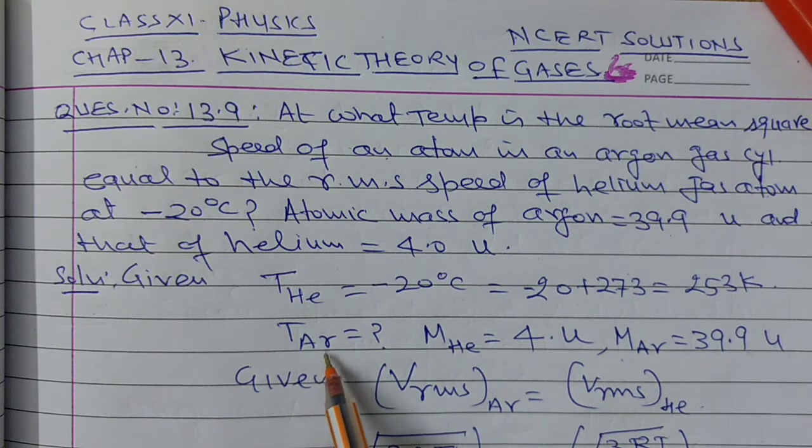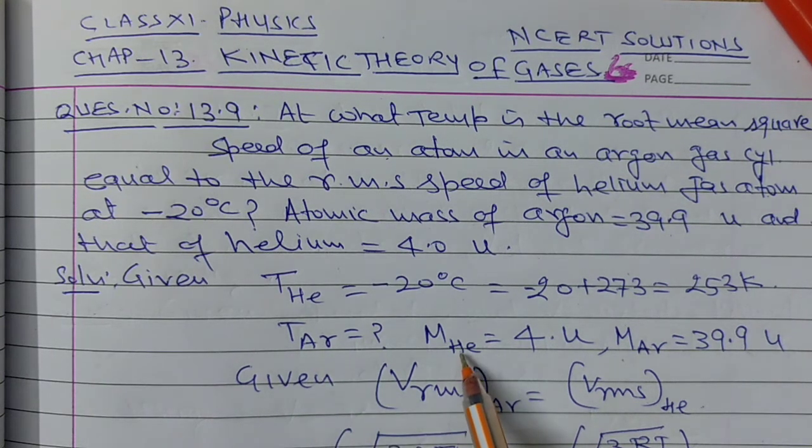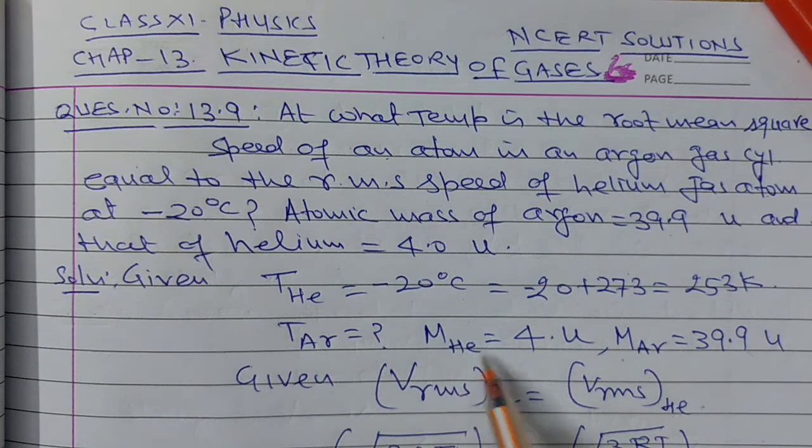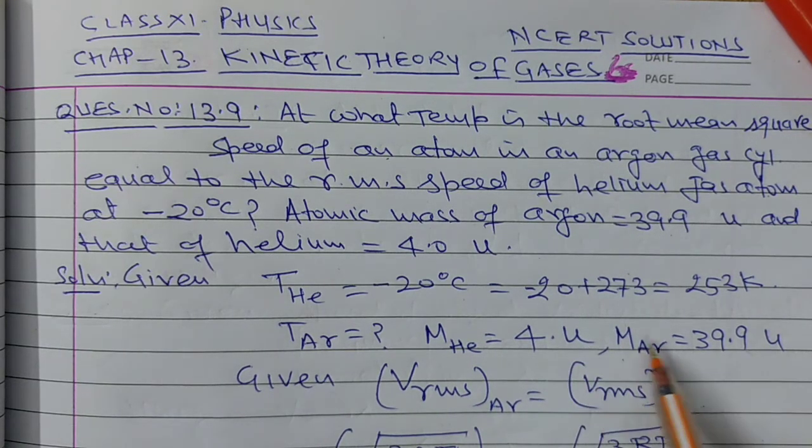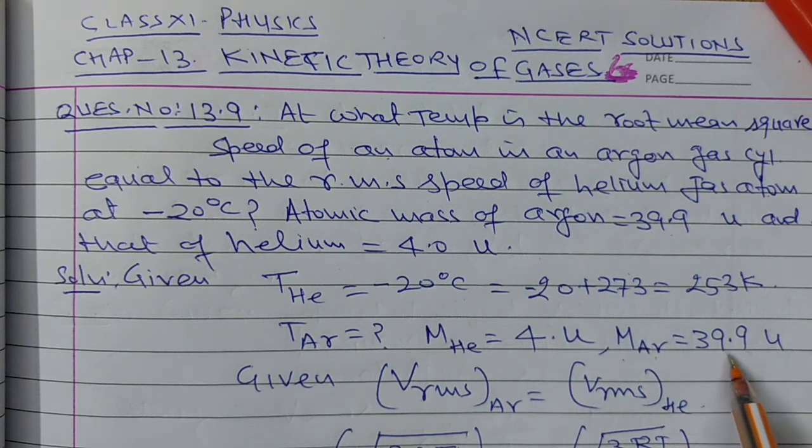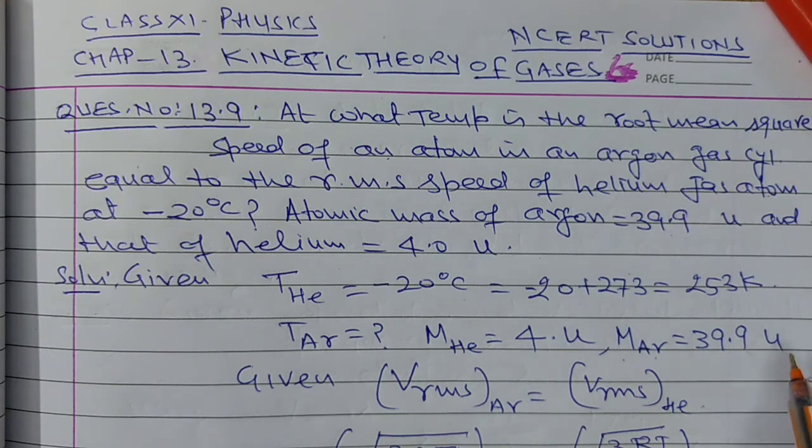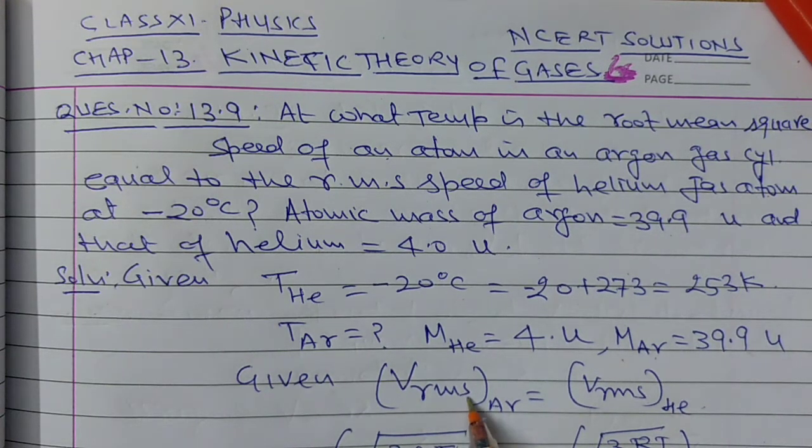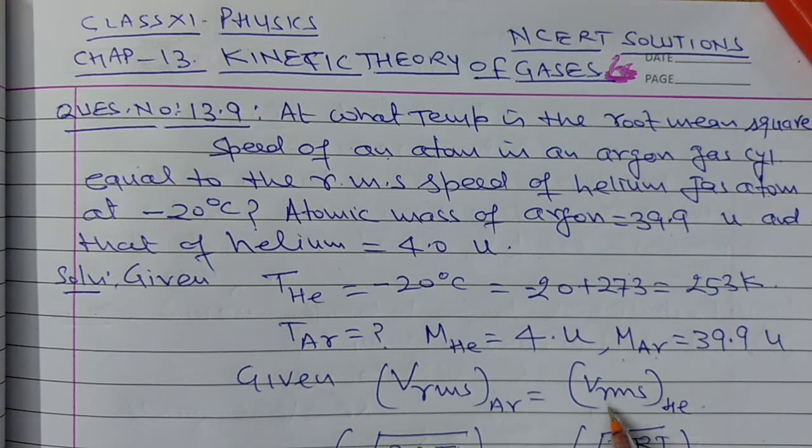Temperature of argon gas we need to calculate. Given that the molecular mass of helium is 4 U and that of argon is 39.9 U. And it is also given that the RMS speed in argon equals the RMS speed in helium.